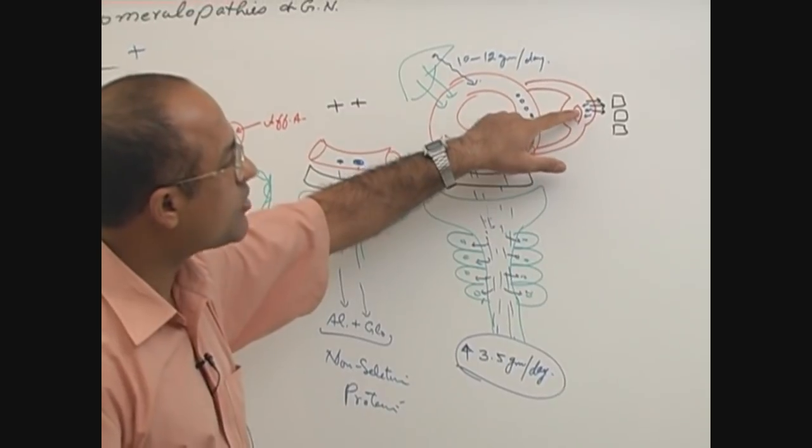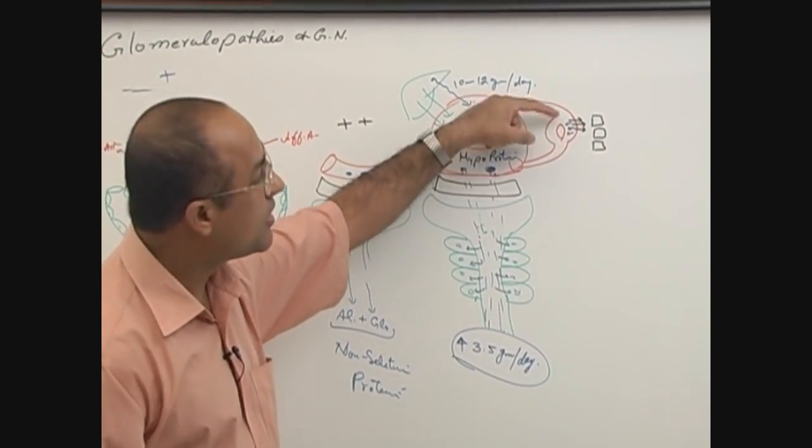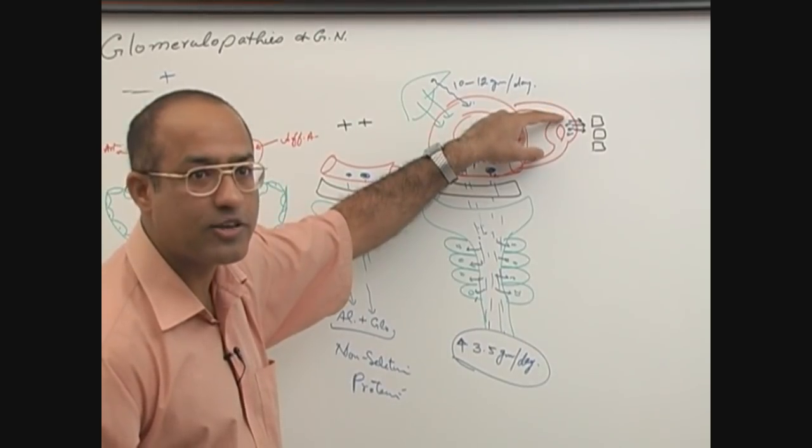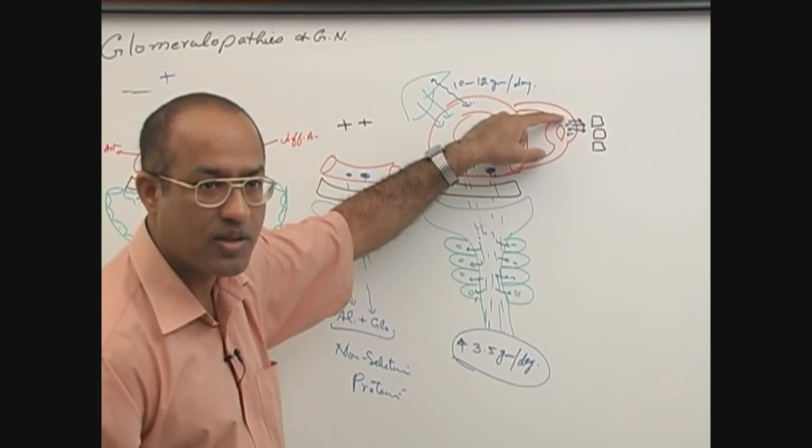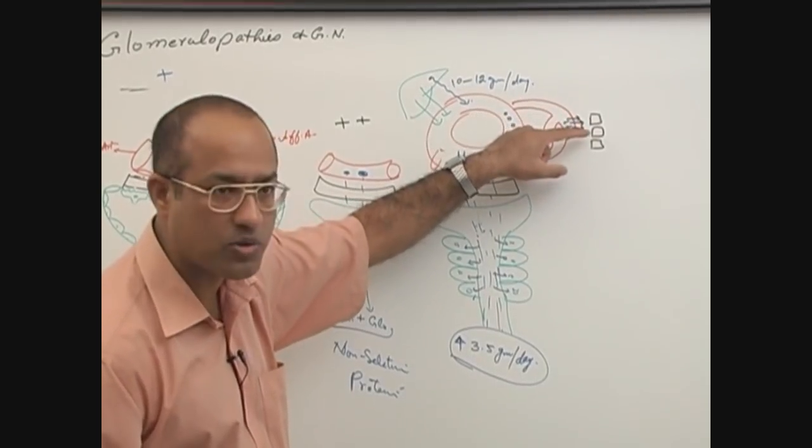The capillary on their arterial end, when they are on the arterial end, hydrostatic pressure is more. Hydrostatic pressure is more than the osmotic pressure of proteins, so fluid leaks out.